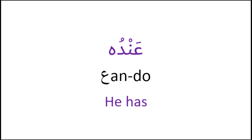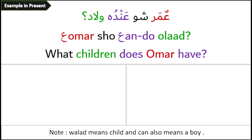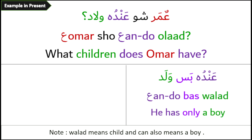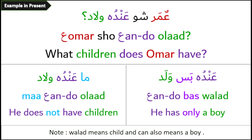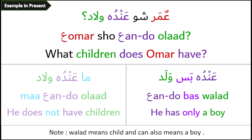Now I will repeat each one and use it in a sentence. عنده – he has. For example: شو عندو ولاد؟ – What children does Umar have? The reply is: عندو بس ولد – He has only a boy. Or if you want to negate it: ما عندو ولاد – He does not have children.